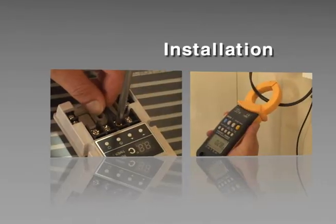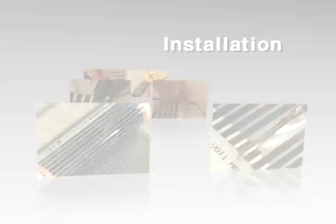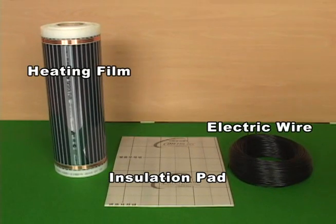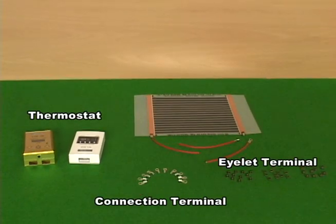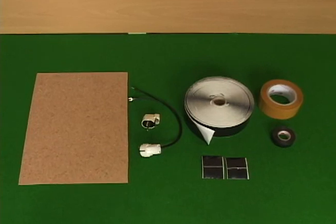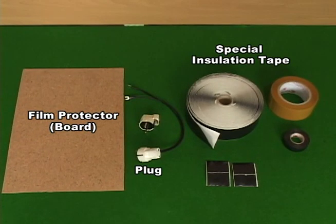Now let's look at the hot film and its applications. To construct and install hot film, the following tools are required: heating film, insulation pad, connecting wires, thermostat, wire connector, inlet plug, film protector, supporting boards, plugs, insulation tape, and electrical tape.